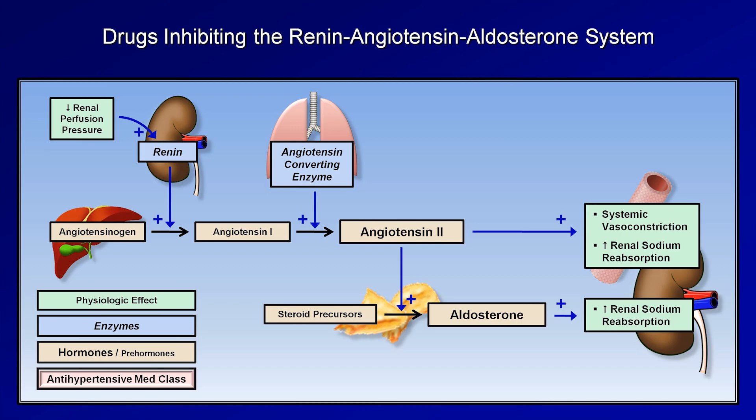To introduce the classes of antihypertensives, I'm going to bring back some diagrams from the introductory video on hypertension. In that video, I discussed that the two major physiologic systems indisputably involved in the development of hypertension were the renin-angiotensin-aldosterone system and the sympathetic nervous system. This diagram displays how pro-hormones are converted through steps catalyzed by renin and angiotensin-converting enzyme, producing the active hormones angiotensin-2 and aldosterone, which cause systemic vasoconstriction and increased reabsorption of sodium in the renal tubules.